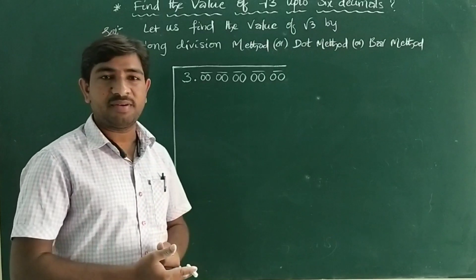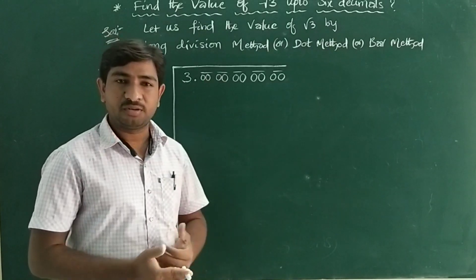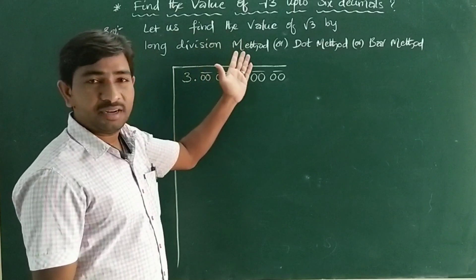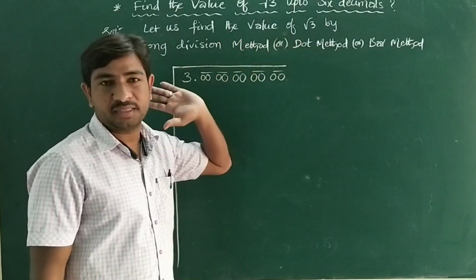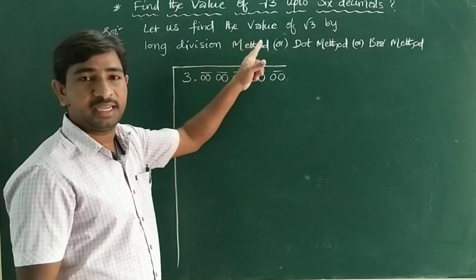To find irrational number values, we use the long division method. Today I am going to explain that. By the long division method, or dot method, or bar method, we can find the values of √3, √5, √7, and such numbers.